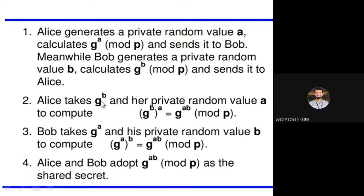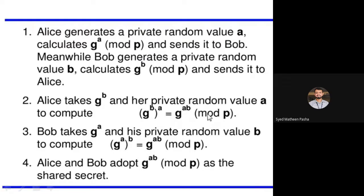Alice takes G to the power of B, which Bob has calculated, and combines it with her private random value A to compute G^B whole power of A, which gives G to the power of AB mod P. Alice knows A, Bob knows B, and both know G and P.